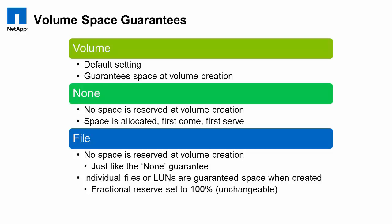The next topic we need to cover is understanding the volume space guarantee option. The default value is volume. When the volume space guarantee is set to volume, it guarantees the full size of the volume within the aggregate that contains it. You can also change these options later on after the fact, and we'll talk about that later in the presentation. The next option is none, and no space is reserved for the volume.